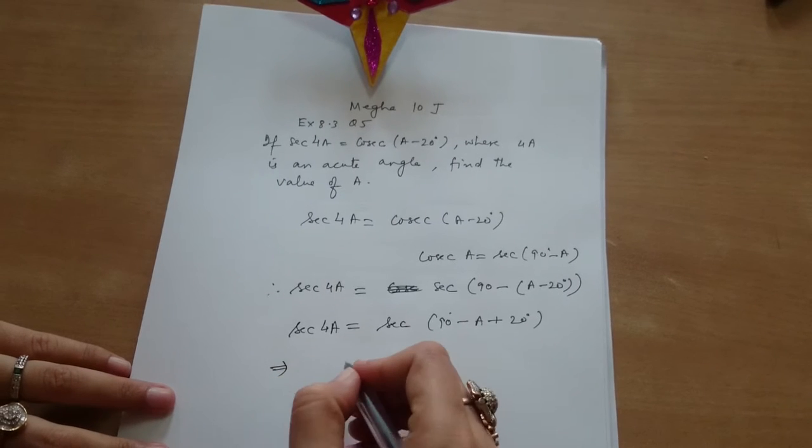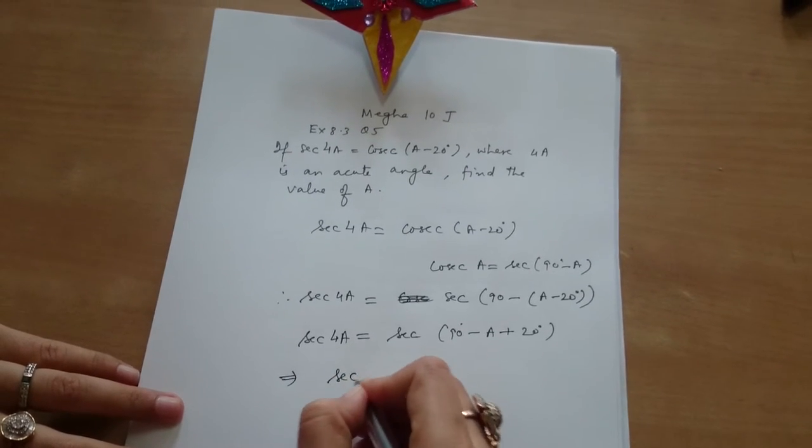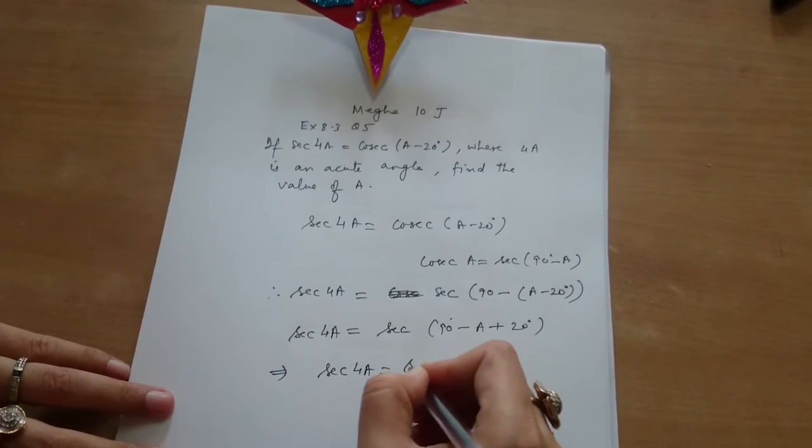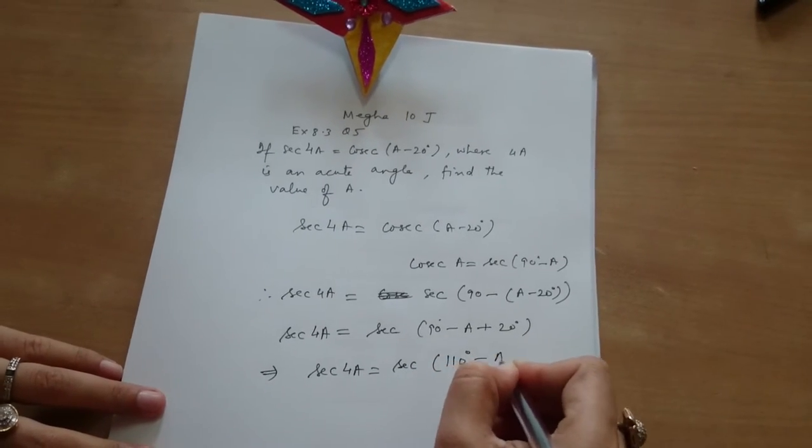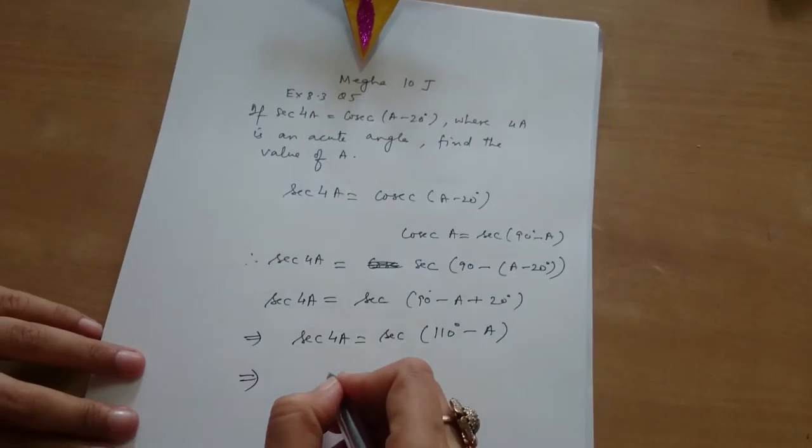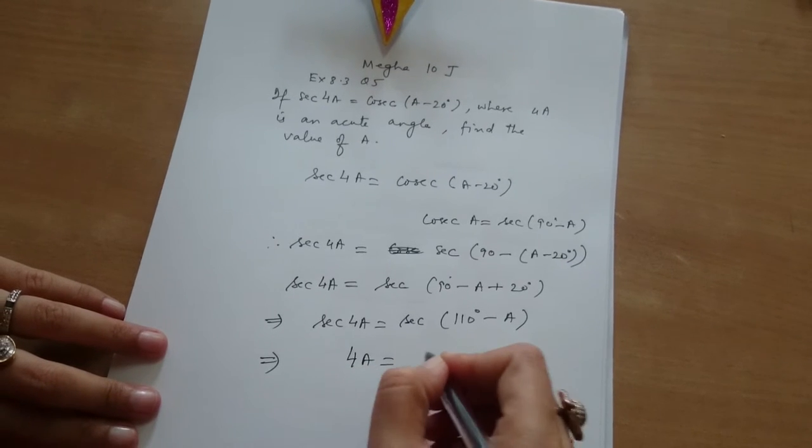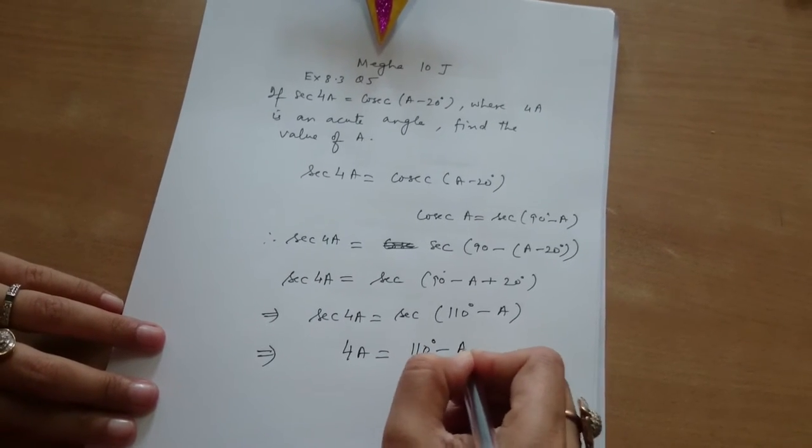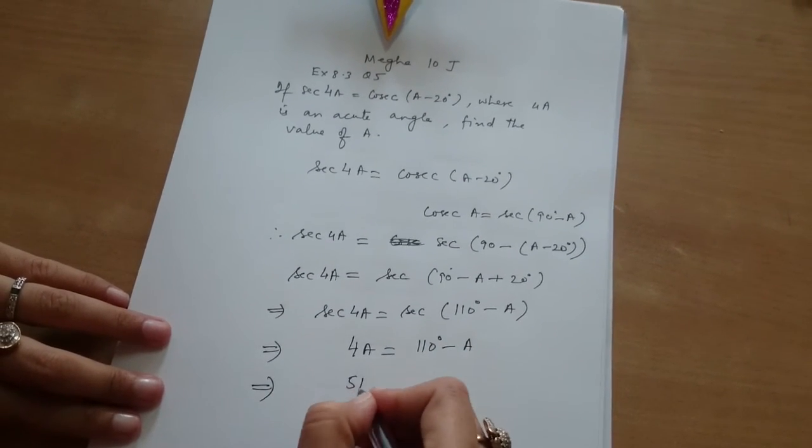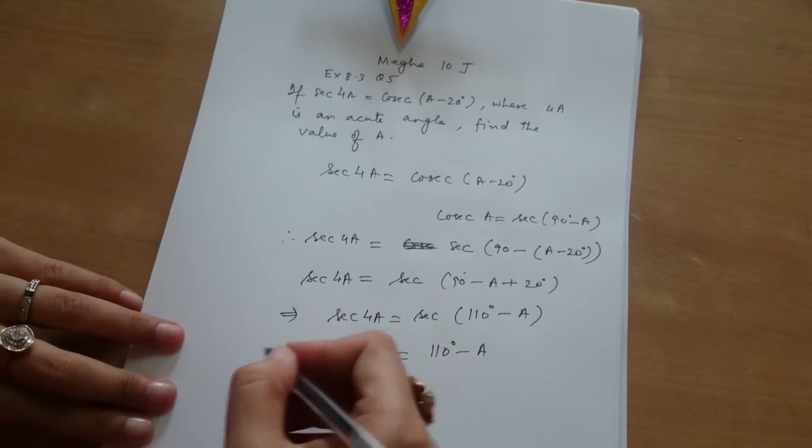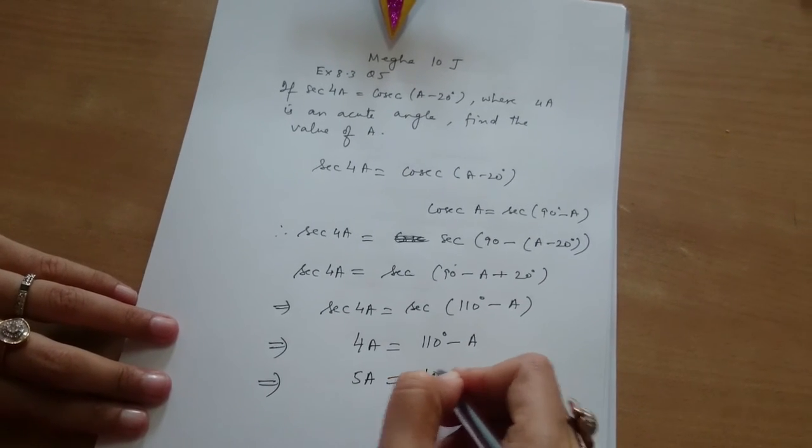This implies that secant 4a equals secant 110 degrees minus a. 110 degrees minus a. This implies 4a equals 110 degrees minus a. This implies 4a plus a—Yes. 5a equals 110 degrees.